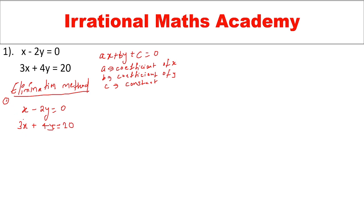I want to solve by eliminating x to get the x and y values. For that, I need to equate the coefficients of x in both equations. If I want to eliminate x, I need to make the coefficients equal, then add the equations. If both coefficients are positive, I'll multiply one equation by a minus sign.